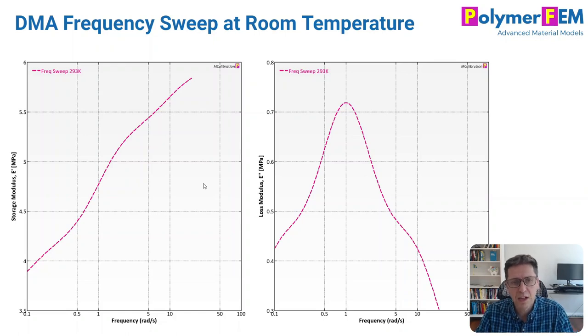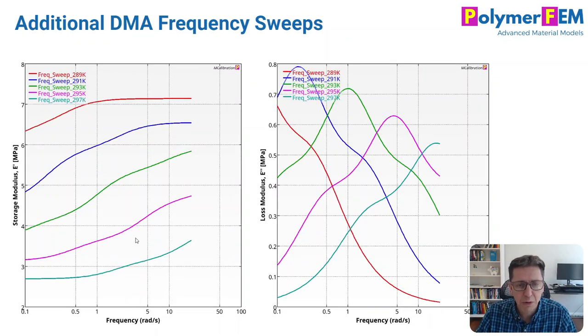So what people often do is that they use a DMA test instead. I can take this material, run the frequency sweep at the temperature of interest which in this case is room temperature. I can measure the storage modulus, the loss modulus as a function of frequency, and my DMA machine is accurate over a relatively narrow range of frequencies. In this case about 0.1 up to say 20 on the frequency scale, and that's just not enough to create the master curve or predict a really long-term response. But what I can do is repeat that frequency sweep at different temperatures.